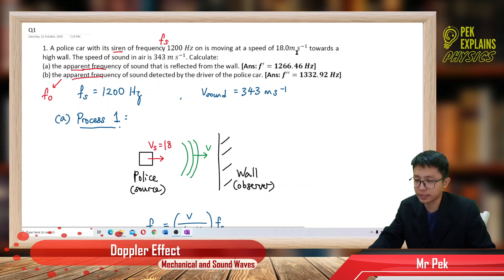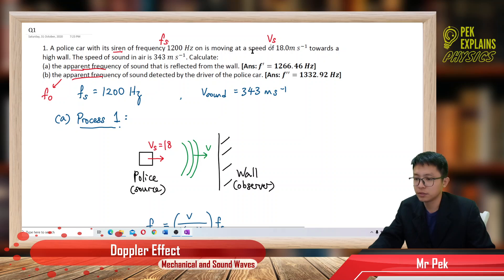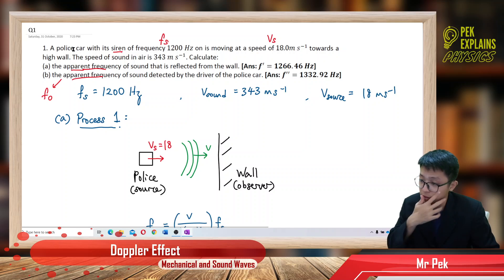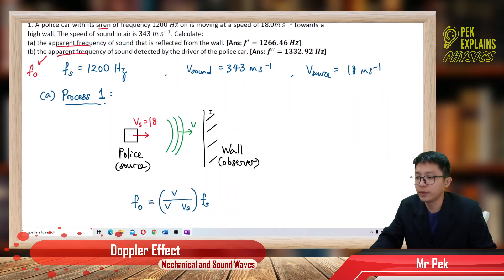The speed 18 meters per second is the speed of the source — the speed of the siren. The source frequency is 1200 Hz, speed of sound is 343 m/s, and speed of source is 18 meters per second towards the wall.